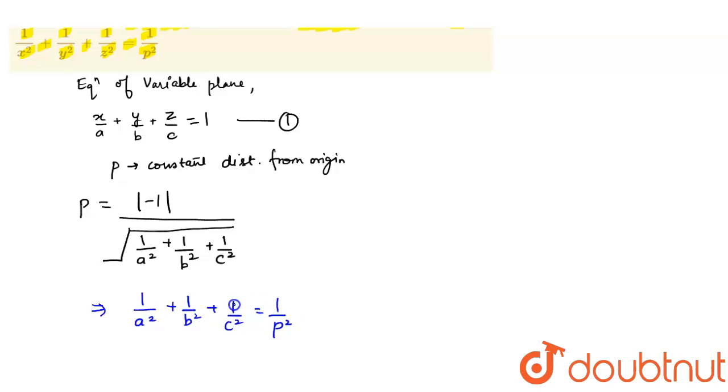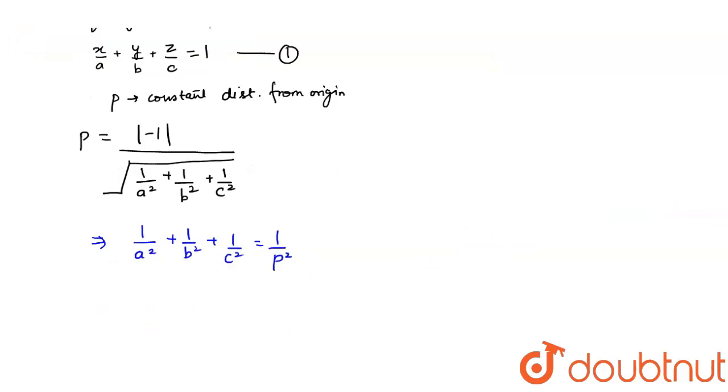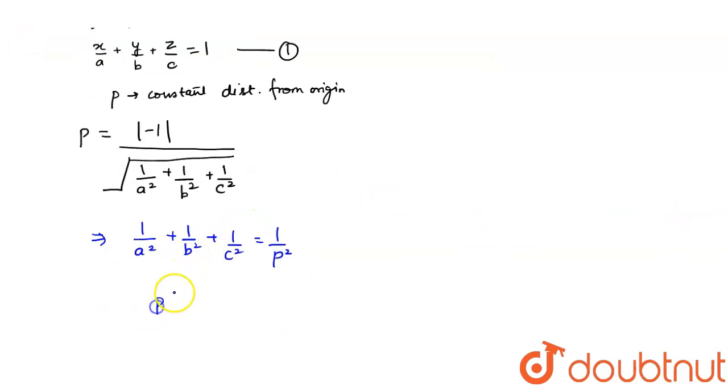So, let the planes pass through a, b, c and parallel to the coordinate plane meet at point p. Then, what are the coordinates of p? The coordinates of p are a, b, c.